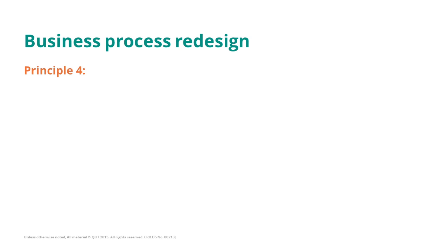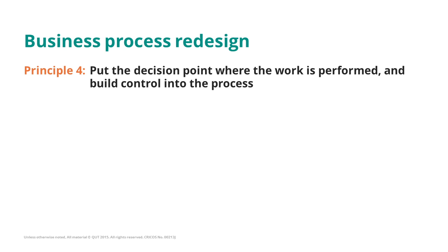Principle number four tells us to put every decision point in a process, preferably at the place where work is performed, and specifically the work that produces the information required to make the decision. It also tells us to try to seamlessly integrate all control activities into the rest of the work performed in the process.